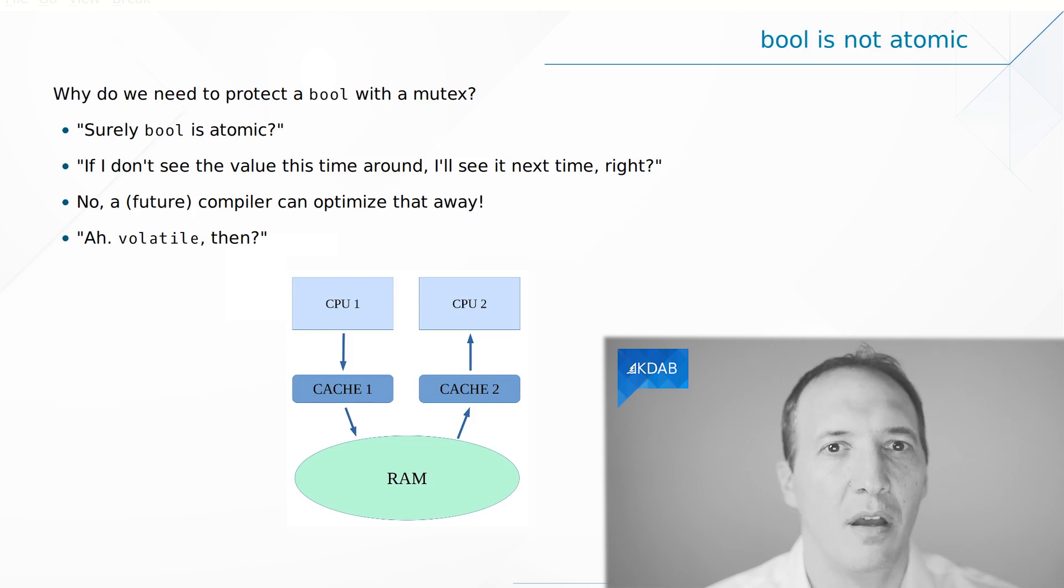Think about what would happen on an architecture with two CPUs. Each CPU has its own cache, and you have the main thread running on one CPU and the secondary thread running on the other. Let's have a look at this. The main thread which runs on CPU 1 will set the boolean to true, say please terminate. But when it does that, it actually simply modifies the cache. It doesn't actually go to modify the RAM.